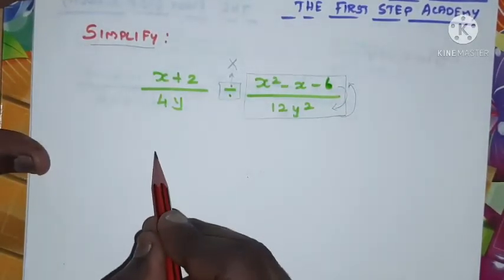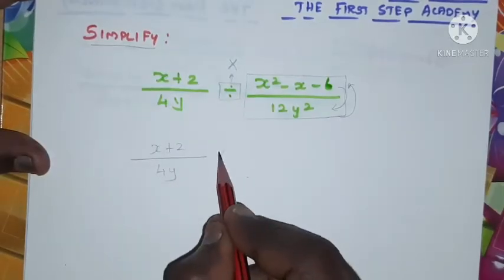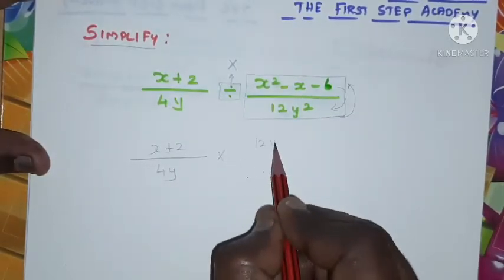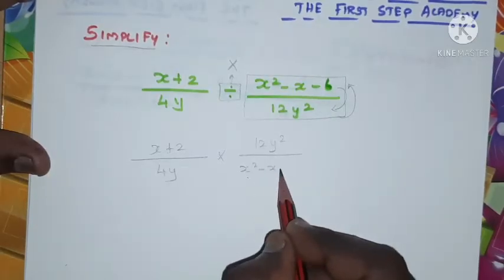So I'm going to rewrite the problem according to this: (x+2)/(4y) times (12y²)/(x²-x-6).